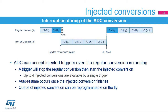Once an injected conversion is finished, the regular conversion sequence can be resumed, and the injected conversion result is stored in dedicated data registers. Flags and interrupts are available for end of conversion and end of sequence. The choices for an injected channel can be reprogrammed on the fly — even if a regular or injected conversion is in progress, you can add a different channel to the queue so the next injected channel can be different from the previous one.